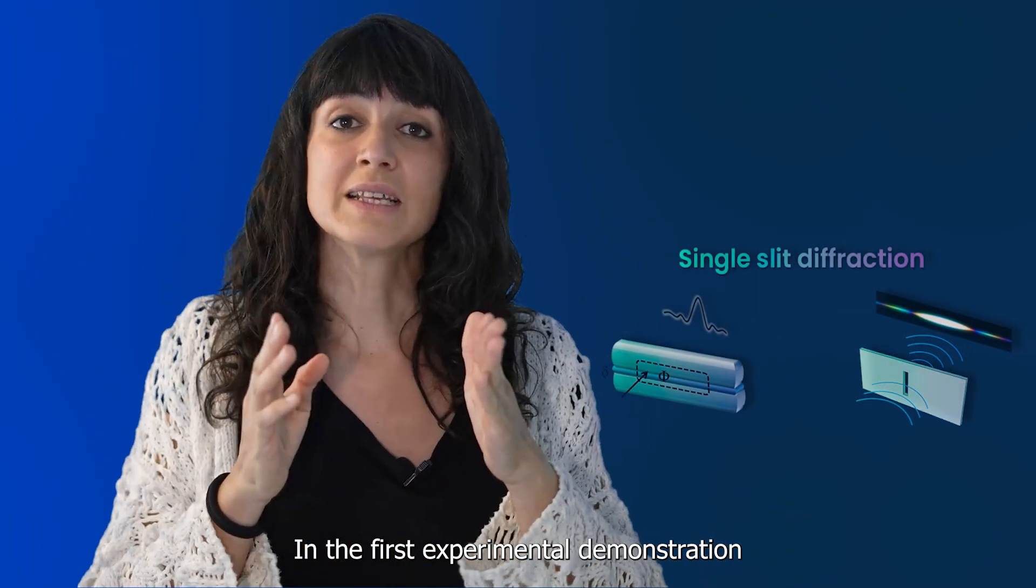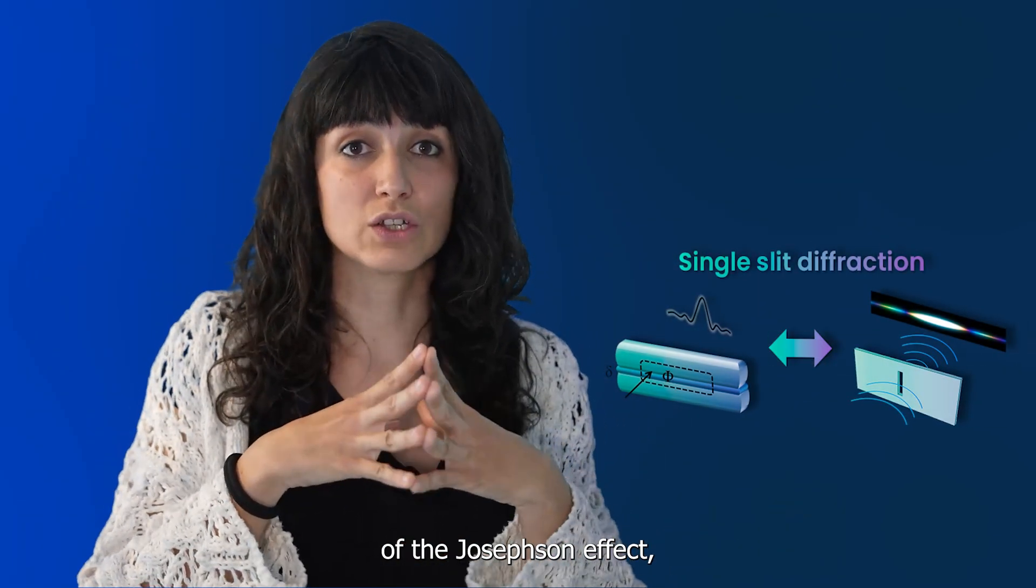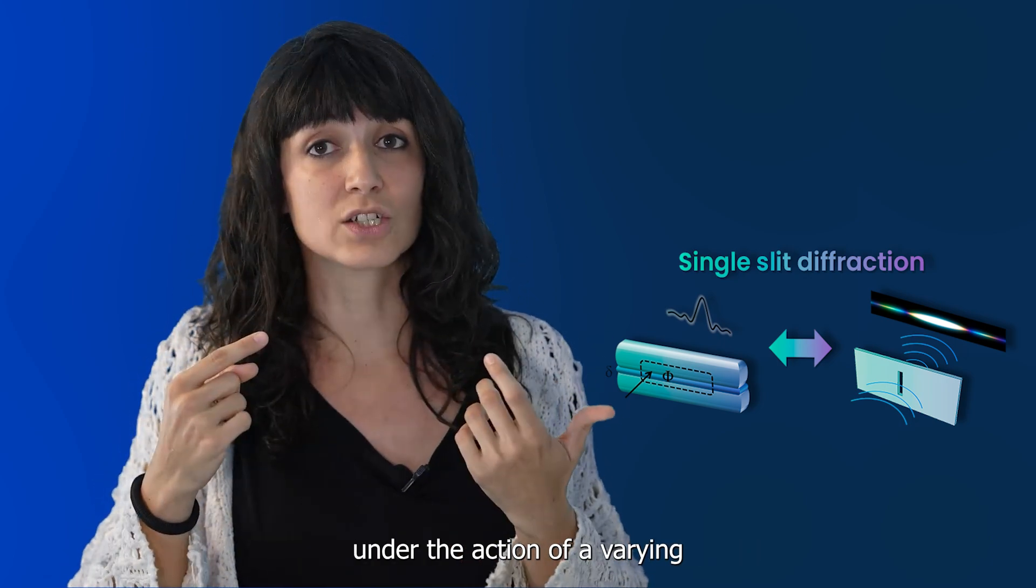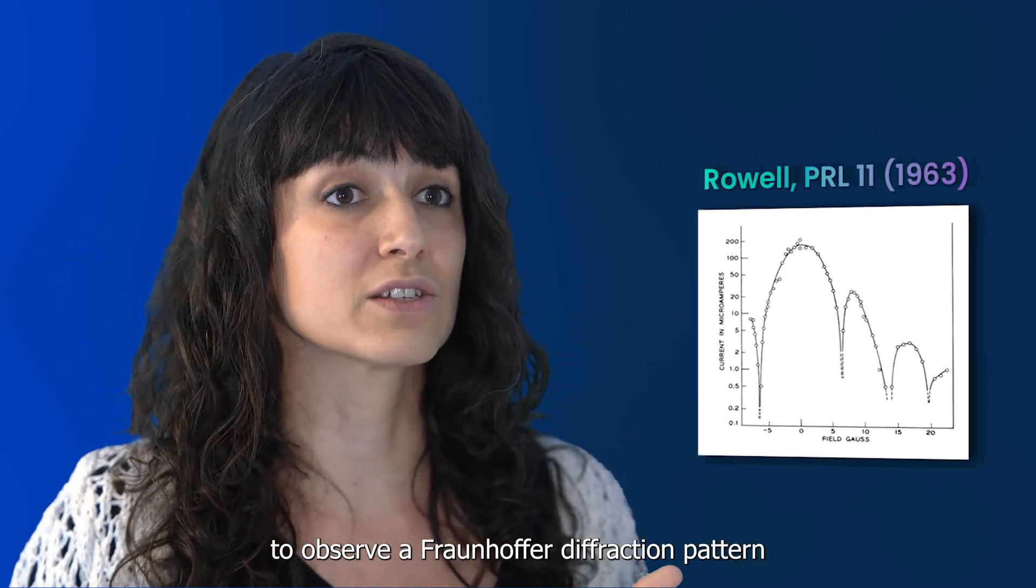The reason is that magnetic fields allow to induce phase differences in the superconducting condensate and therefore interference effects. In the first experimental demonstration of the Josephson effect, Rowell used one single Josephson junction.